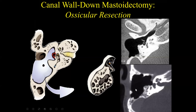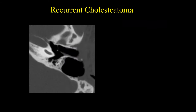In this particular case, they performed the mastoidectomy, resected the posterior wall of the external auditory canal, and all of the ossicles have been resected — a complete ossicular resection. The other terminology you may hear is a radical mastoidectomy.